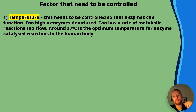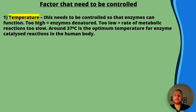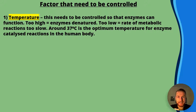Some factors that need to be controlled: number one, temperature. This needs to be controlled because if temperatures are too high, enzymes get denatured — as the particles gain heat energy they vibrate more, which can break hydrogen bonds, denaturing the enzyme so they can't form enzyme-substrate complexes. If the temperature is too low, the rate of reactions is too slow because there's not enough kinetic energy and molecules are not colliding frequently enough. Around 37 degrees is the optimum temperature for enzyme-catalyzed reactions in the body.